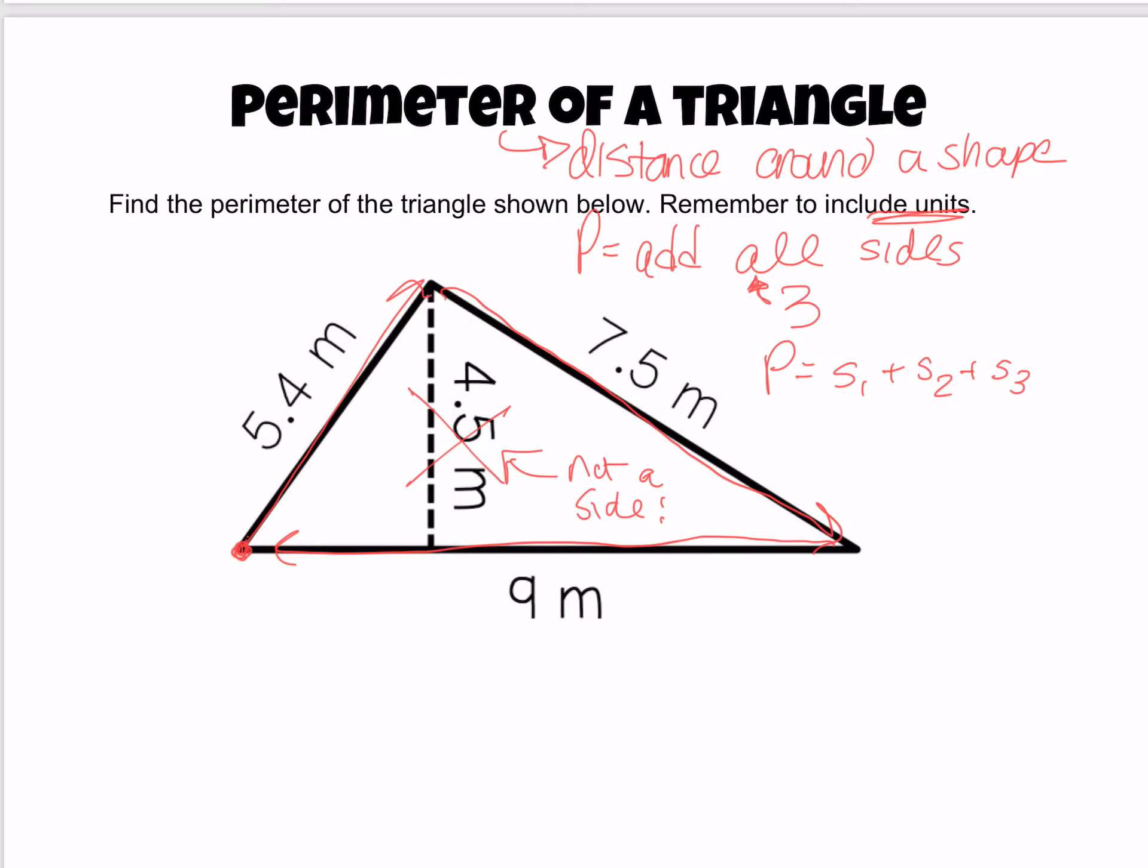but it's not a side. So the perimeter is those three outside numbers: 5 and 4 tenths, 7 and 5 tenths, and 9. Make sure you have all three of those, but no other numbers. You shouldn't have the 4 and 5 tenths there.